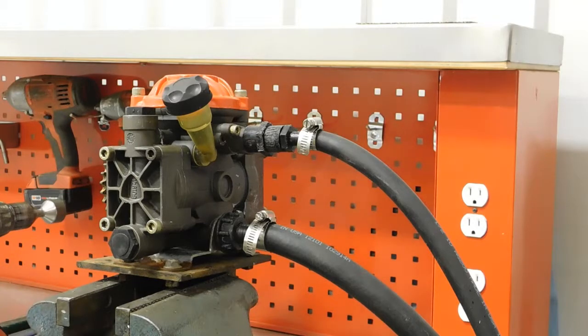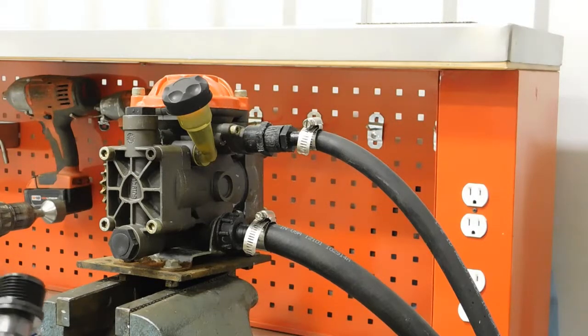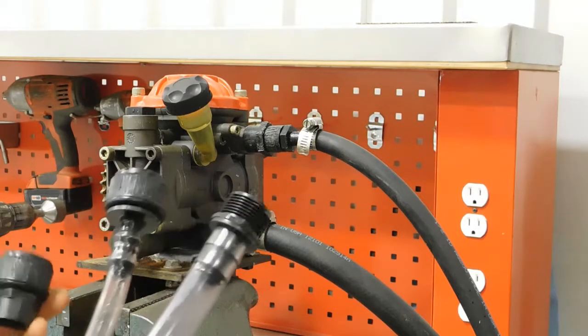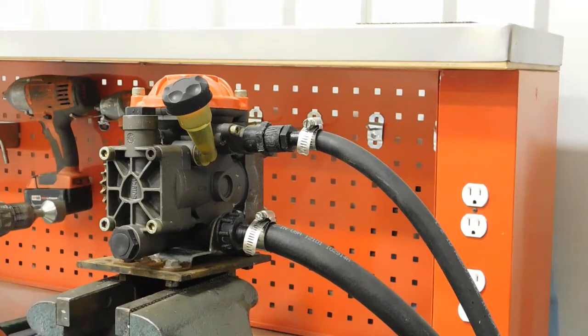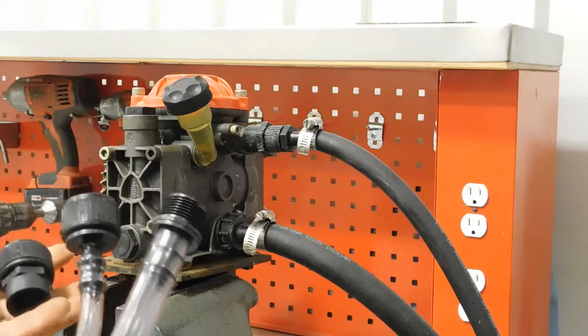If you have bought a grain drill from us, a complete fertilizer kit, you would have received a five-piece flush and winterize kit. It comes with two hoses and three black plastic fittings.